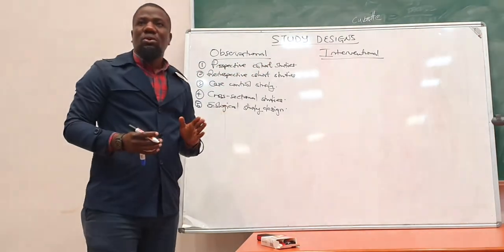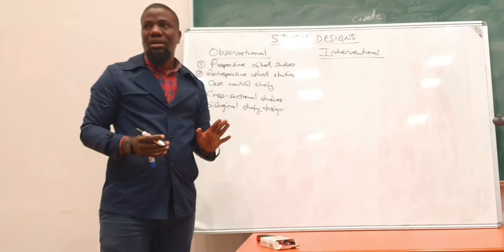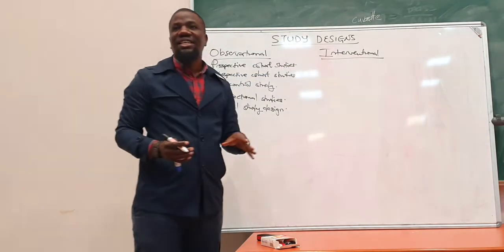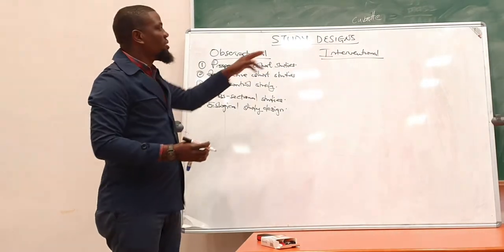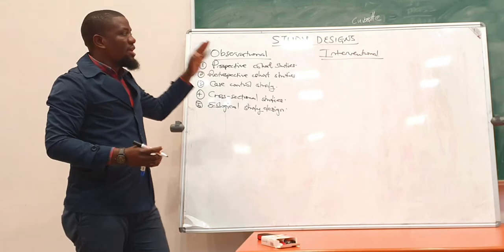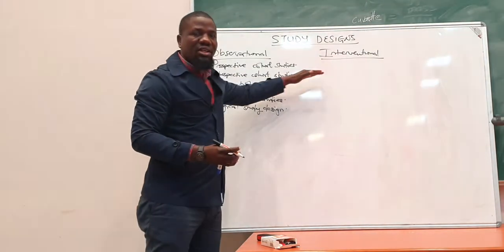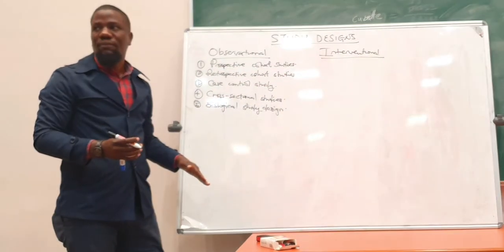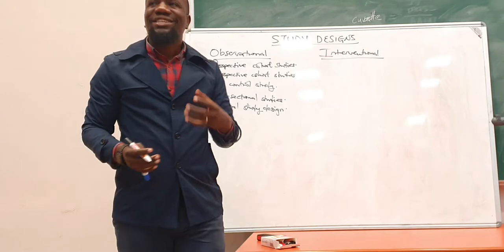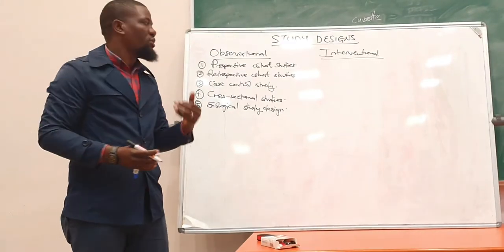Now, for the study designs referred to as interventional studies — as long as a study design is interventional, it would most likely be on top of all the observational studies in terms of strength of evidence. Interventional studies will give you better evidence than the observational studies. So it would be interventional studies first, then followed by observational studies in that order. The interventional studies give you better strength of evidence than the observational studies, most of the time.